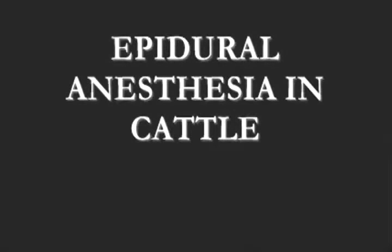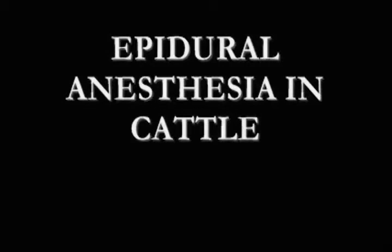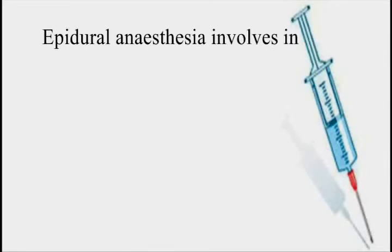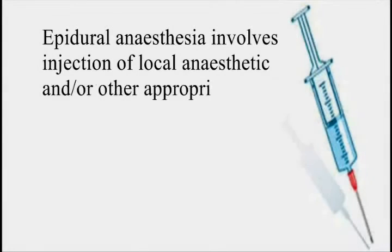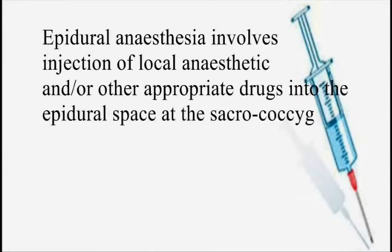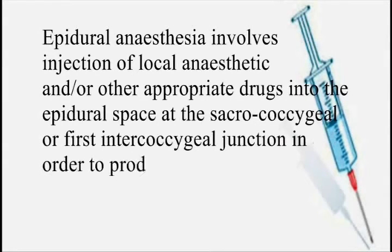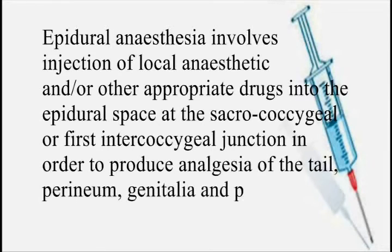Epidural anaesthesia in cattle involves injection of local anaesthetic and/or other appropriate drugs into the epidural space at the sacro-coccygeal or first inter-coccygeal junction, in order to produce analgesia of the tail, perineum, genitalia, and pelvic viscera.